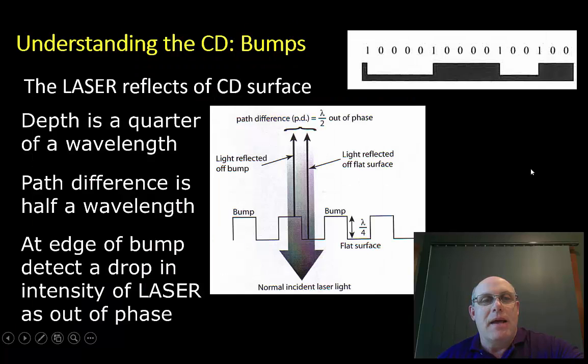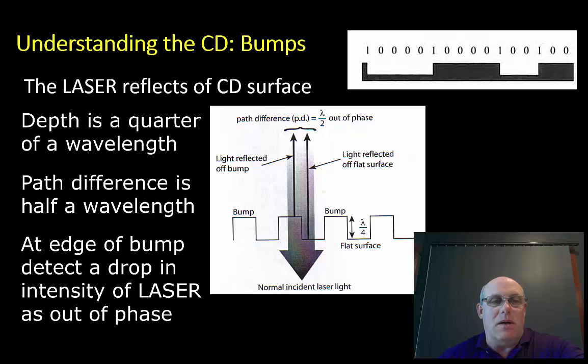When we're looking at the actual bumps themselves, the laser has this particular setup. It takes information to do whatever it's doing in terms of a binary code. At the edge of the bump, these particular bumps are a quarter of a wavelength deep. By the time a light source hits the edge of the bump and rebounds off, or hits the bottom of the bump and rebounds off, that will be traveling two quarters of a wavelength. In other words, it will be a half wavelength out of phase.